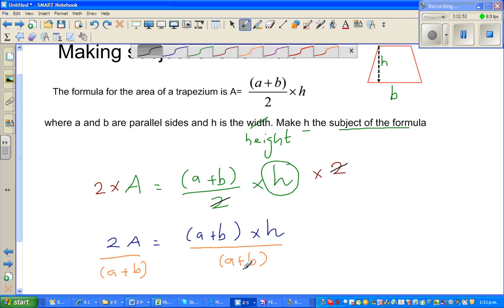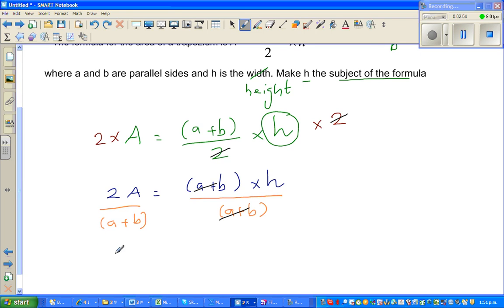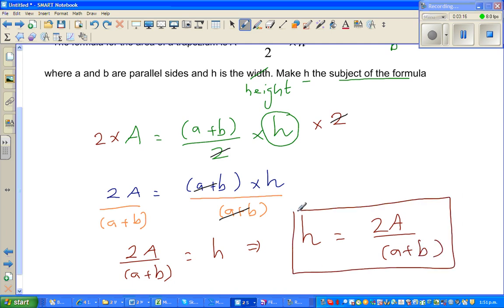You can write finally, 2A over (a plus b) equals h, which implies h equals 2A over (a plus b). Just like that. See you in the next video. I'll do a few more examples on this topic of making a subject of a formula.